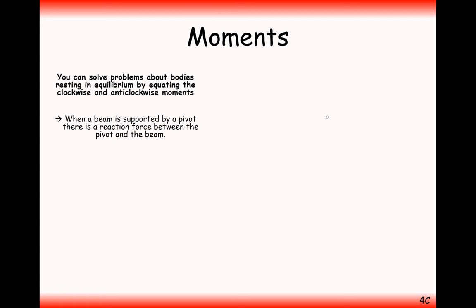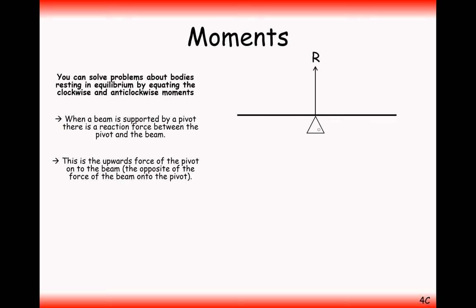When a beam is supported by a pivot, there is a reaction force between the pivot and the beam. This is the upwards force of the pivot onto the beam — effectively the opposite force of the beam onto the pivot. Some weight is going to be acting downwards onto the pivot, and this is the pivot's reaction back upwards to keep the beam supported.